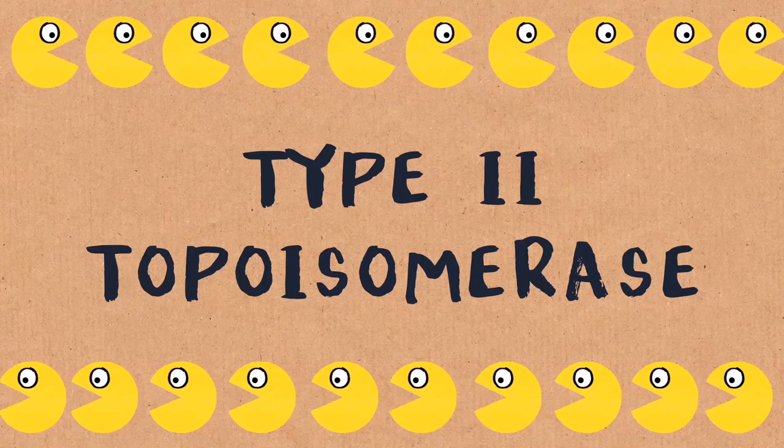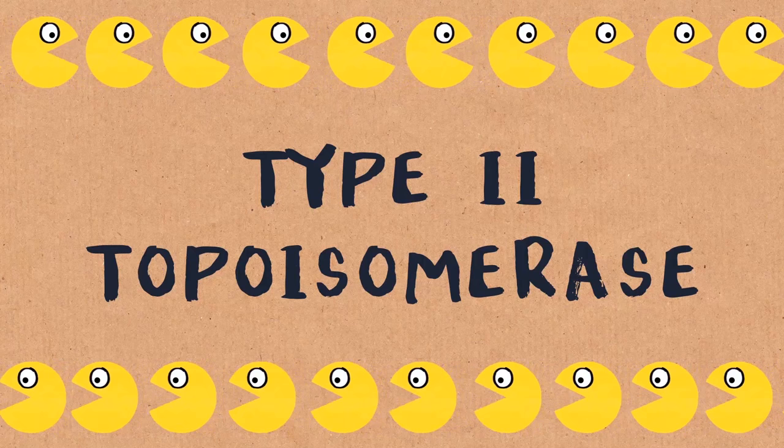Type 2 topoisomerases are enzymes that are ubiquitous. They have been found in every possible organism, from archaea to humans, and they are essential to life. Meaning, if the type 2 topoisomerase in the cell doesn't work, the cell dies.